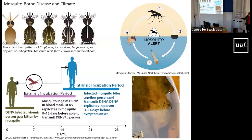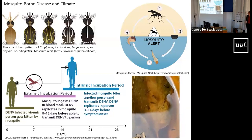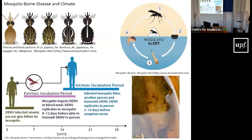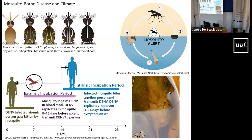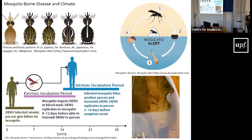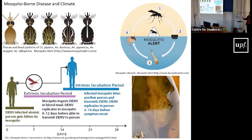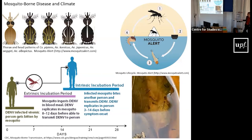At a certain point in the development process, the larva turns into a pupa. The pupa then emerges into an adult mosquito, and the process can begin again.